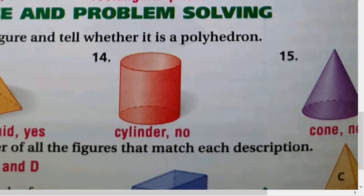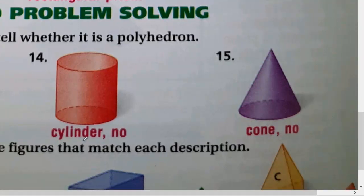Question thirteen: the base is a square and we have only one base. All other faces meet at one point at the top and those faces are triangles, so this is a pyramid. The base is a square, so we call it a square pyramid. Is it a polyhedron? Yes, because it has no curved sides and it is closed.